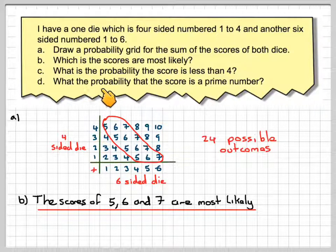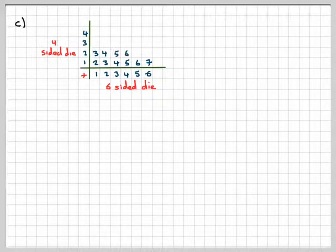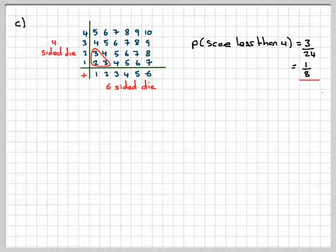What is the probability of a score less than 4? Well, using the diagram, less than 4 means does not include 4. So it's going to be those 3 there. So it's going to be 3 out of 24, and we should cancel that down to being 1 out of 8. So put both down the actual answer, and then the canceled down 1, in case you make a mistake.